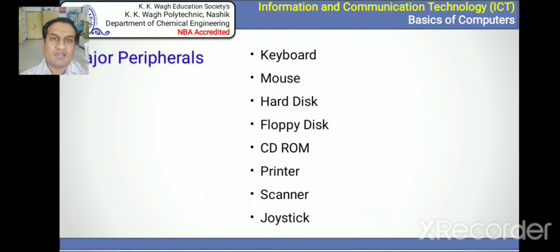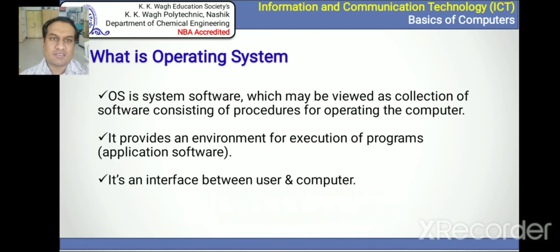There are different major peripherals: keyboard, mouse, hard disk, floppy disk, CD-ROM, printer, scanner, joystick, etc. These peripherals may be added to as new generations of technology emerge, with different parts and components being added to the peripheral list.